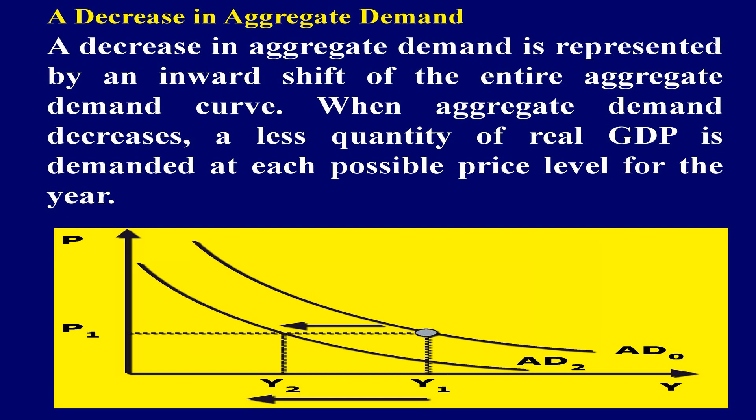A decrease in aggregate demand is represented by an inward, or leftward, shift of the entire aggregate demand curve. When aggregate demand decreases, a lesser quantity of real GDP is demanded at each possible price level. AD0 is the original aggregate demand curve; at a given price level P1, aggregate demand is Y1. The decrease in aggregate demand at the same price level is represented by a shift of the aggregate demand curve leftward or downward to AD2. For example, if personal consumption spending decreases, aggregate demand will decrease and the AD curve shifts leftward.